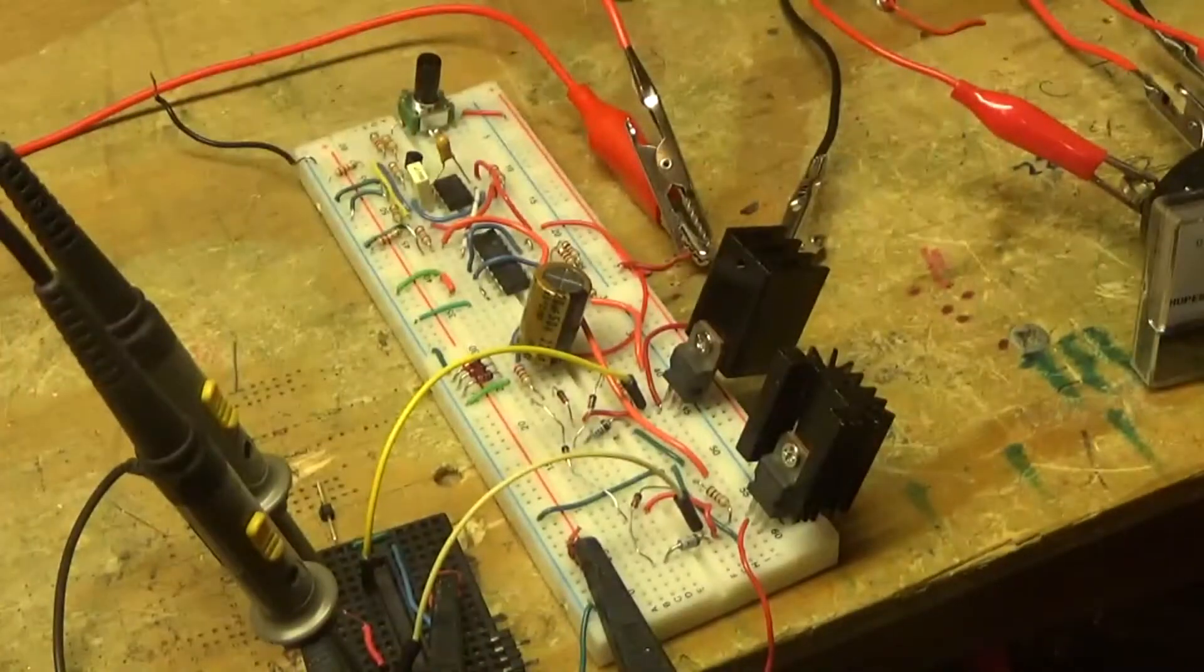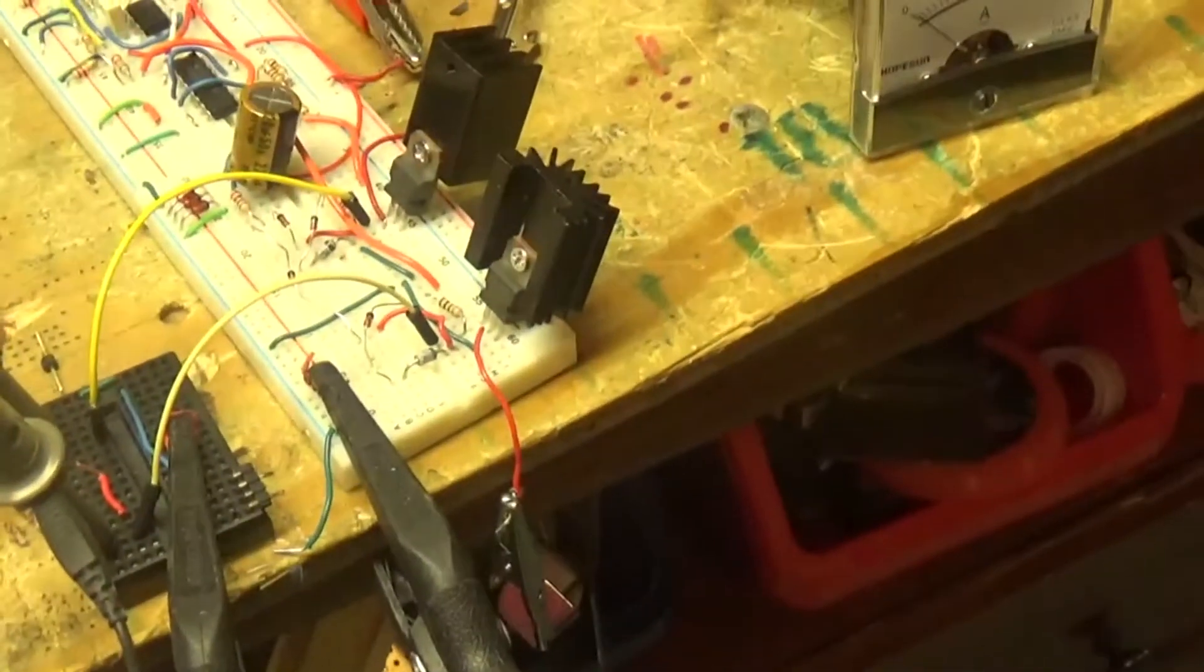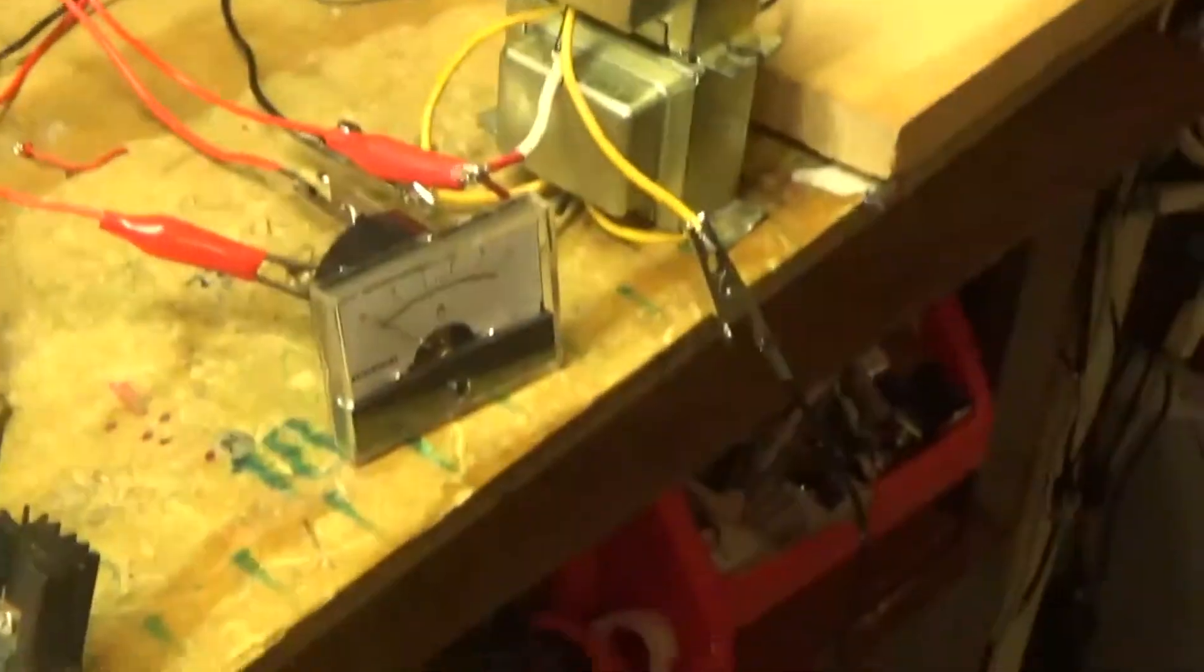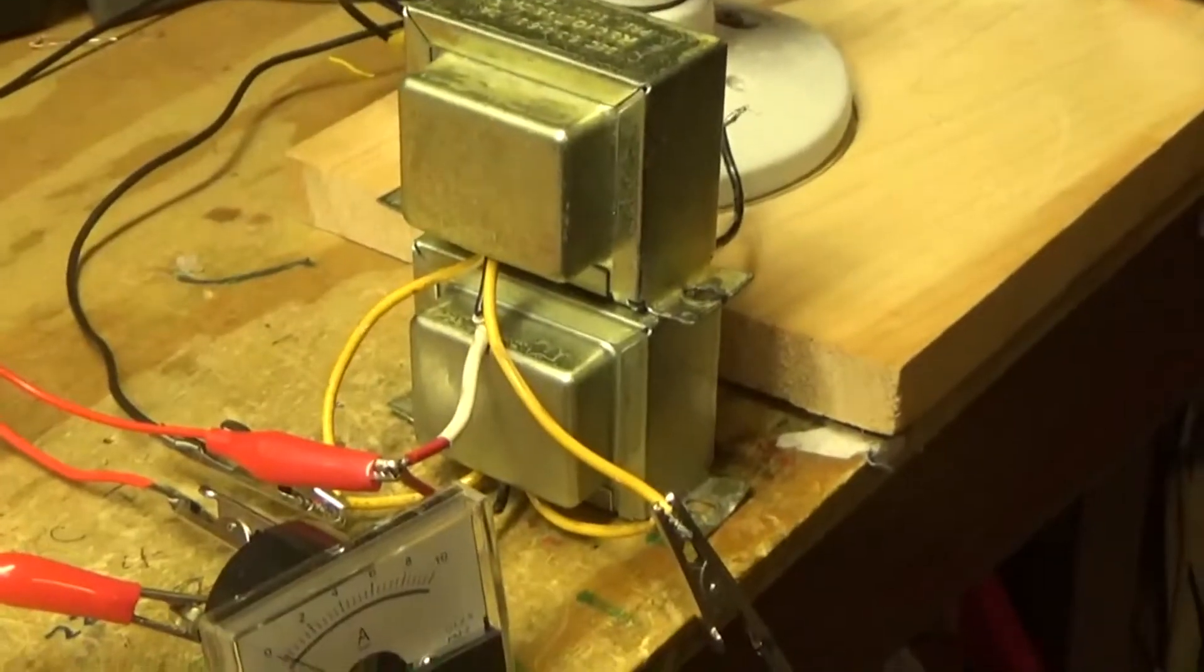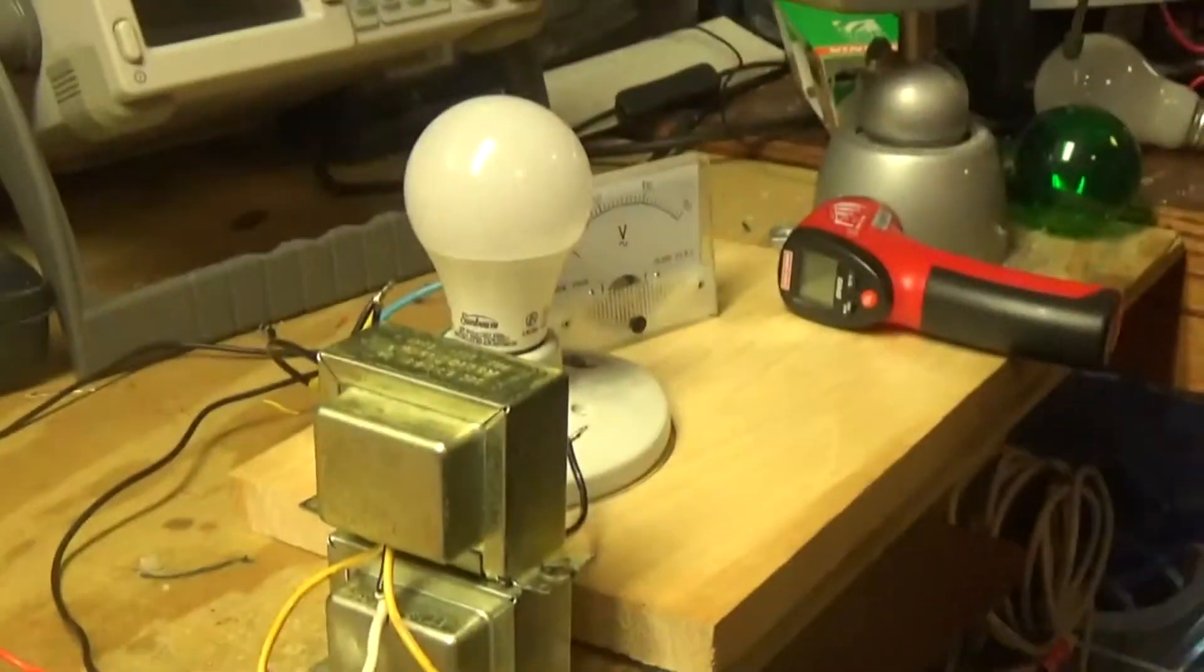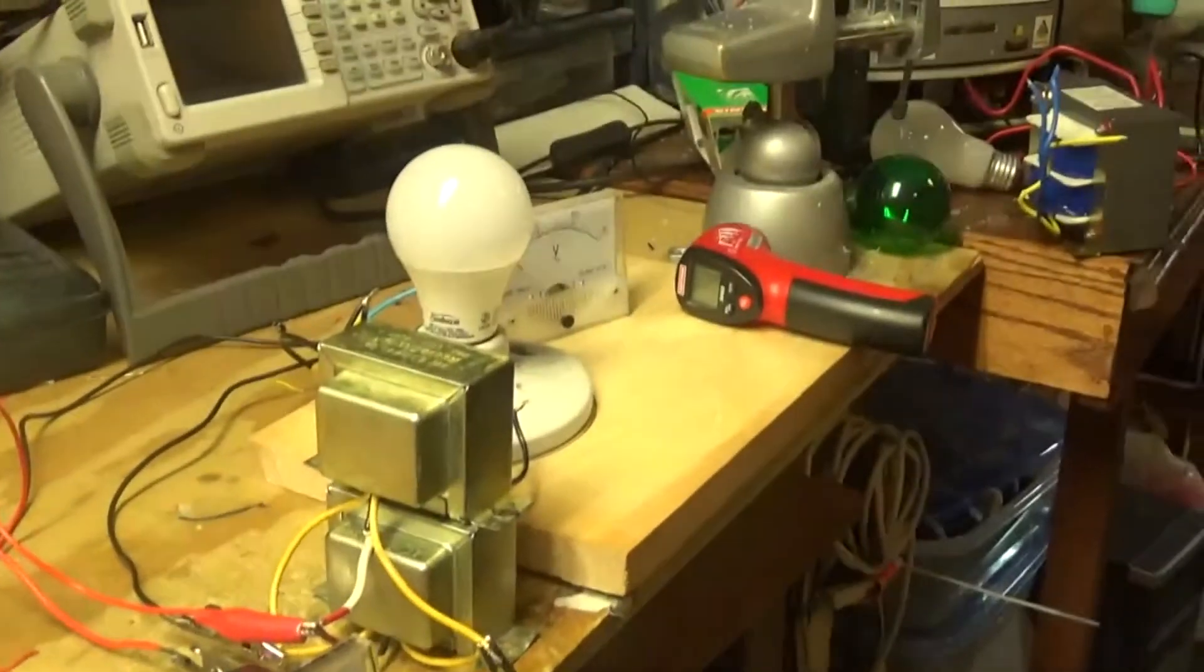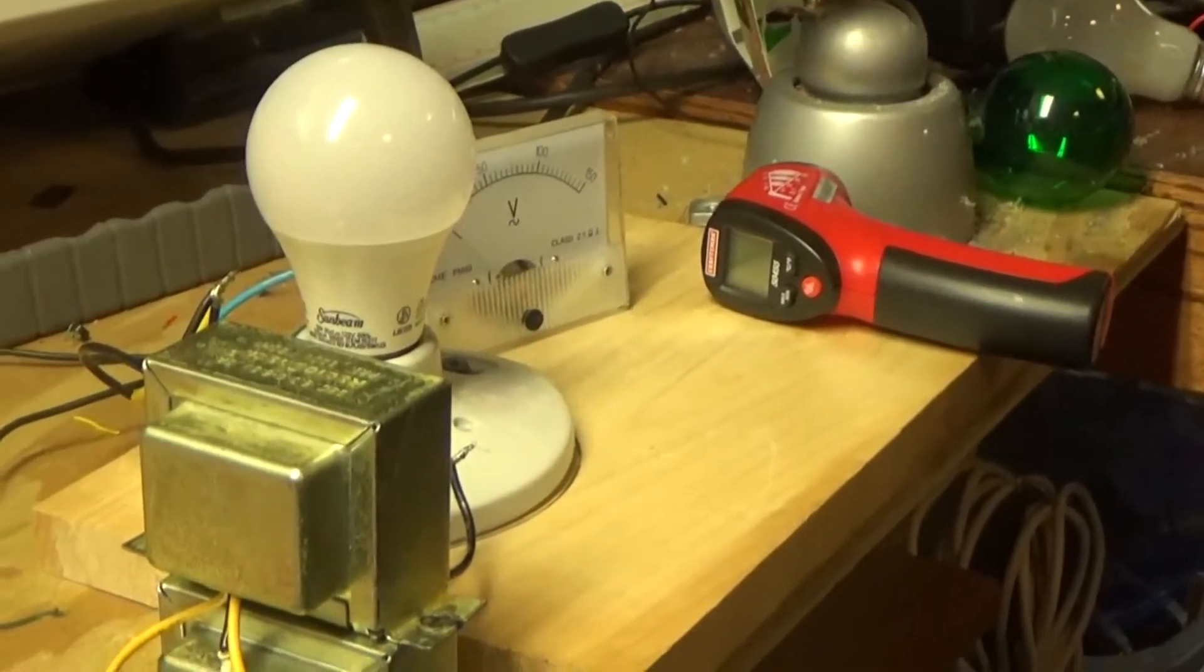Here it is on the breadboard. I have my oscilloscope hooked up to both the MOSFETs. I have an amp meter here. I have two 3-amp transformers hooked up in parallel. There are only 3 amps. I'm waiting for bigger ones to come through the mail. I have a little light bulb in there and an AC voltage meter.